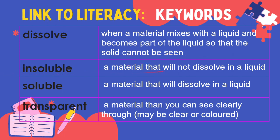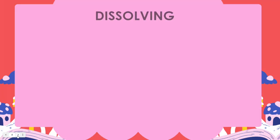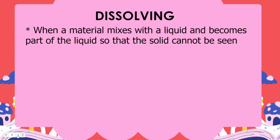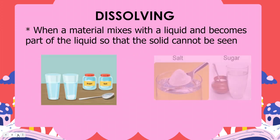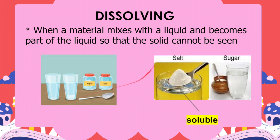Insoluble is a material that will not dissolve in a liquid. Soluble is a material that will dissolve in a liquid. Transparent is a material that you can see clearly through — it may be clear or colored. Dissolving is when a material mixes with a liquid and becomes part of the liquid so that the solid cannot be seen.